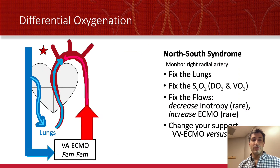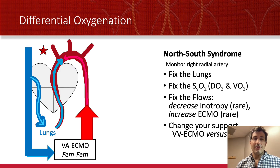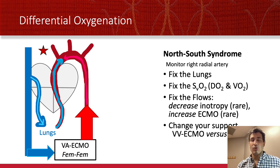This is called differential oxygenation, or north-south syndrome. This is why we measure the right radial artery sat on a patient on VA ECMO. If the heart has recovered but the lungs aren't working, you may have hypoxia at the coronary and brain arteries while the left hand sat or the overall patient appearance looks acceptable.